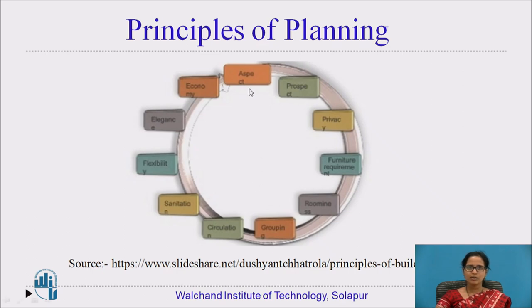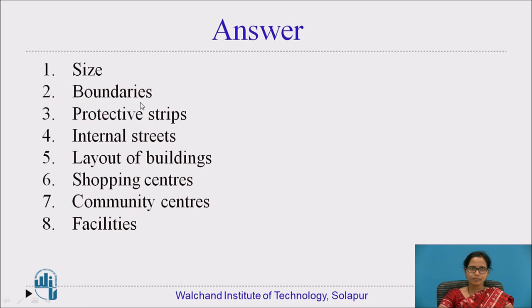The principles of planning include 11 planning aspects. Overall, the size includes the town divided into subcontinents or sectors, with around 10,000 population accommodated, further subdivided into units of 2,000 to 5,000 — sufficient to demand one primary school. The boundaries: the plot should be located such that it consists of main roads from all four sides. Protective strips should be provided to protect traffic.